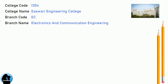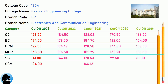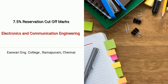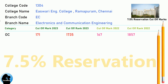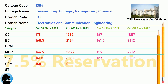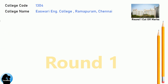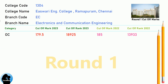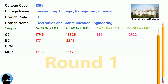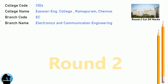BNEA Cut-Off for Eshwari Engineering College in Electronics and Communication Engineering. DNEA 7.5 Reservation Cut-Off for Eshwari Engineering College in Electronics and Communication Engineering. DNEA Round 1 Cut-Off and Round 2 Cut-Off for Eshwari Engineering College in Electronics and Communication Engineering.